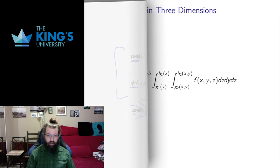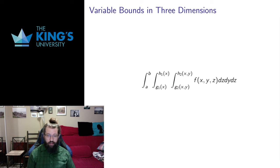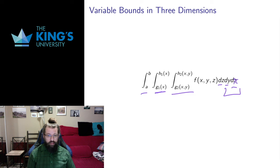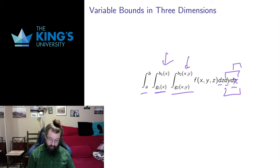This is in R2, but I can do this in R3 as well, and in fact in as many dimensions as I want. For a quick example in R3: if x is on the outside with constant bounds, then the y variable inside can depend on x, and the z variable — which is inside both x and y — can depend on both x and y. The same idea applies: a variable in a bound can only show up inside the integral for that variable.